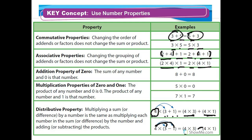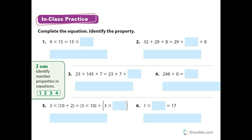For in-class practice, complete the equation and identify the property. Nine times 15 equals 15 times nine — that's the commutative property. You don't have to write the word 'property,' just the name. Number two: 32 plus 29 plus 8 equals 29 plus 32, and that's also commutative.